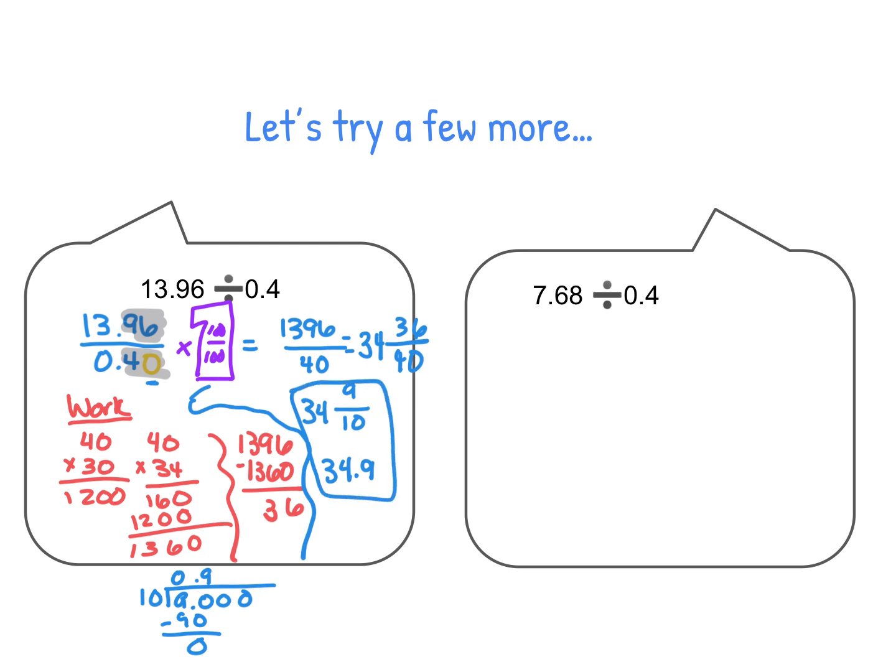Okay, let's move to the next problem. We will write it as a fraction, 7.68 over top of 0.4. We are going to need to add that 0 in, so that we know we have 2 on top and 2 on bottom. We're going to need to multiply by our giant 1, which is going to be 100 over 100. That's our giant 1. We end up with 768 over top of 40.